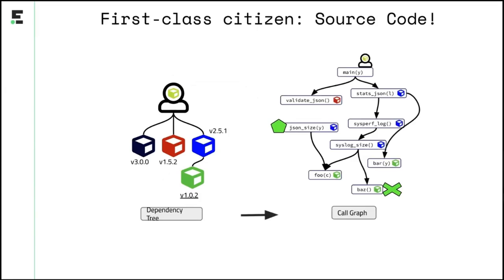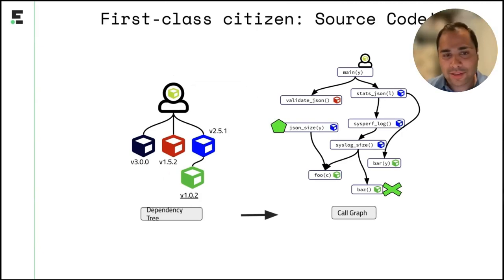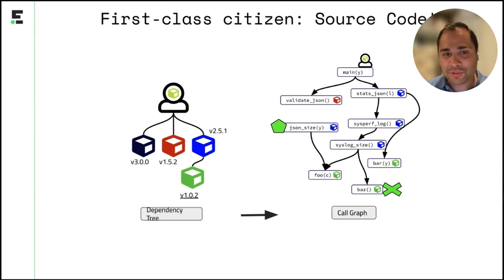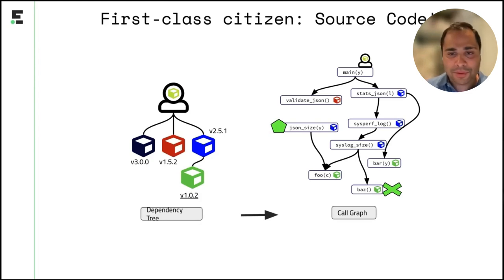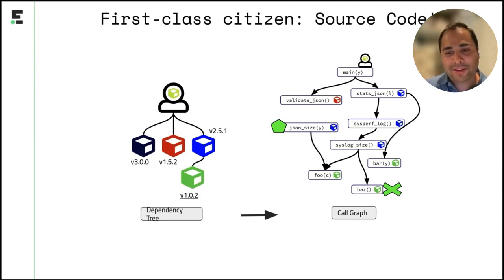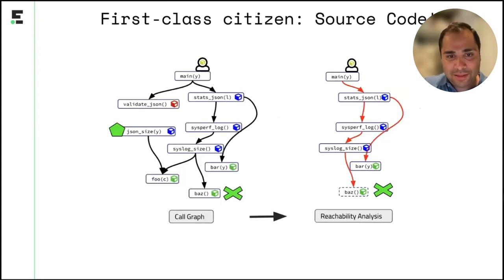The whole idea of doing this as first-class citizens: if you have your dependency tree, we provide this to our call graph generator, build a call graph per product and then per package — it's something we call the stitching process, where we stitch them together. What you end up with is a package-based call graph, where you have all the functions of the application and the functions of each package. Similar to the previous example, we also know exactly which functions are the problematic ones — for example, 'bus' belongs to the green package and 'json-size' belongs to the blue package. Later I'll show how the reachability analysis has a big impact.